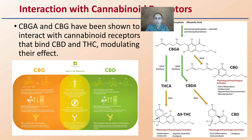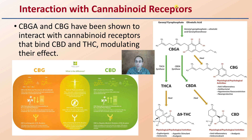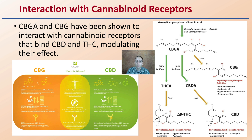The interaction between the cannabinoids and the receptors is important. CBGA and CBG have been shown to interact with cannabinoid receptors that bind to CBD and also THC, modulating their effect. This could potentially mean competing with the effects of other cannabinoids based on how they bind specific receptors in the body. This is why research needs to be done to better understand these potential interactions as well as binding steps.